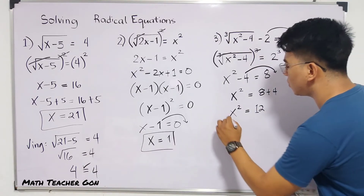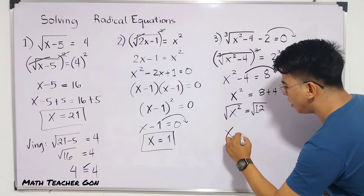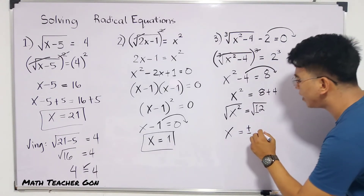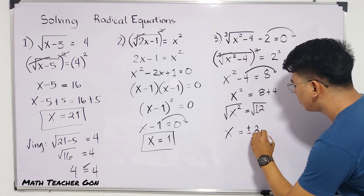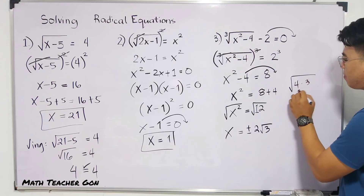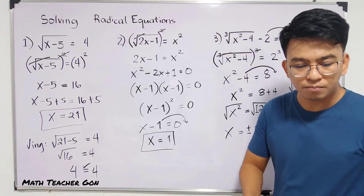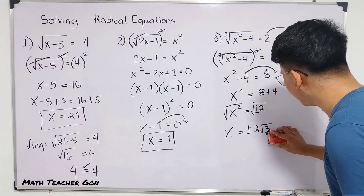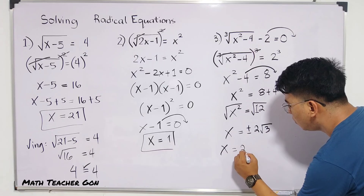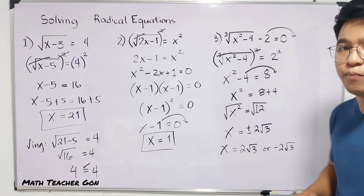The next step is to extract the square root. This gives us x equals plus or minus the square root of 12. Now, the square root of 12 can be simplified: 12 factors as 4 times 3, and the square root of 4 is 2, so we get 2 square root of 3. With the positive and negative sign, our final answer is x equals plus or minus 2 square root of 3, which can also be written as x equals 2 square root of 3 or x equals negative 2 square root of 3.